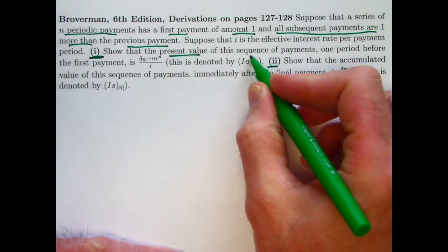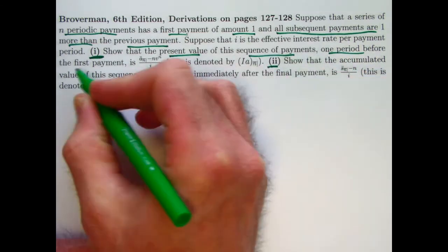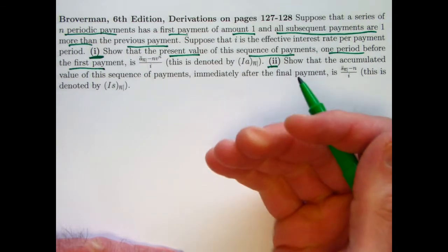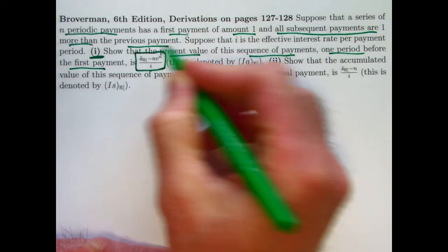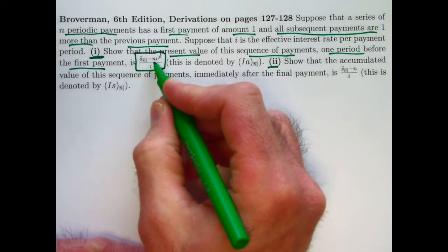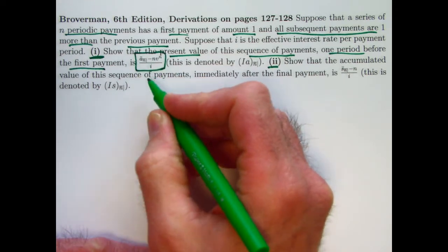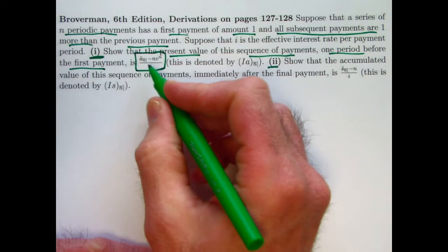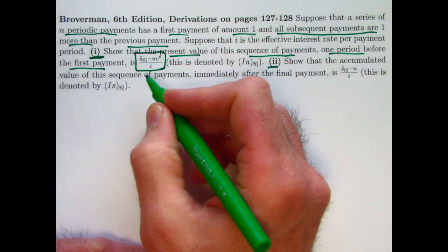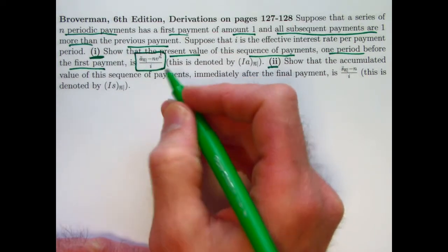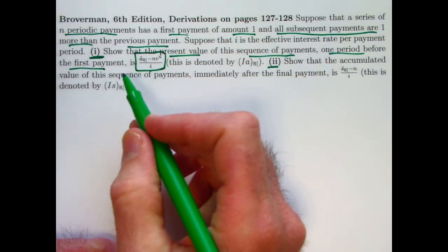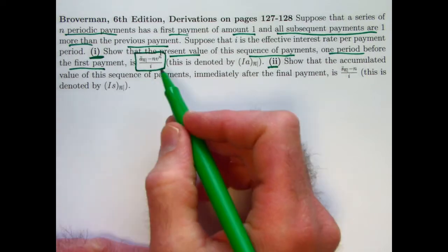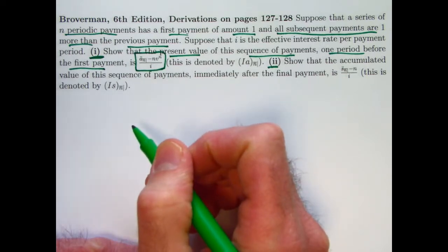First, show that the present value of the sequence of payments one period before the first payment, so as an annuity immediate, is given by this expression here: a_n double dot minus n times v to the n, over i. Recall, a_n double dot is the present value of annuity due with payments of 1, so it's a bit strange. Our annuity here in this problem is an annuity immediate, but the formula involves an annuity due.